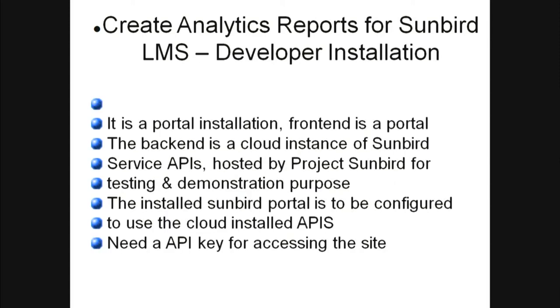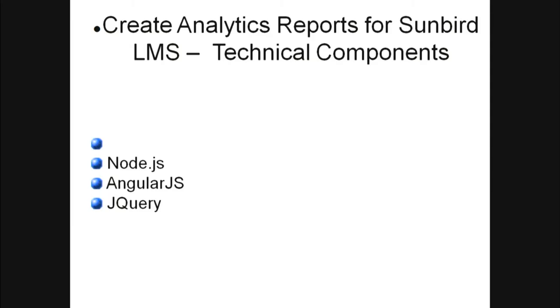We will be using only the developer installation, which is a portal installation. The front end is the portal, and the back end is a cloud instance of Sunbird that they have installed for demonstration and API usage. You have to configure the Sunbird portal using that API — you have to get an API key or authentication token, and use that for connecting to the cloud. The technical components used are mostly Node.js, AngularJS, and jQuery. AngularJS is used for the portal front end, Node.js for the back end, and jQuery is used by both.